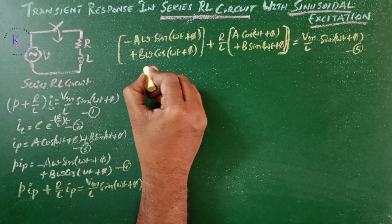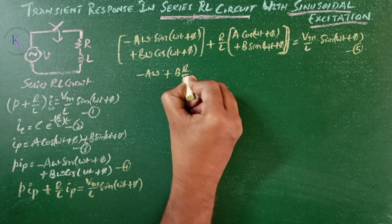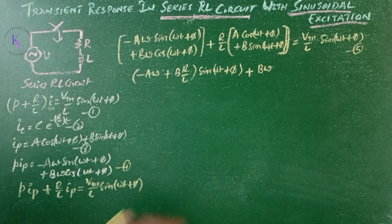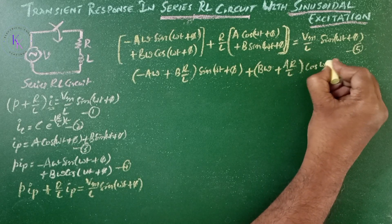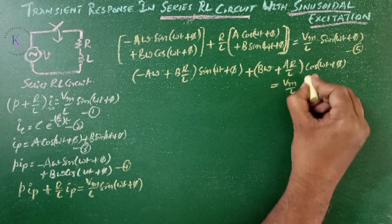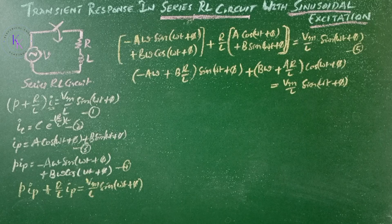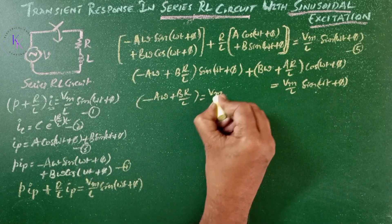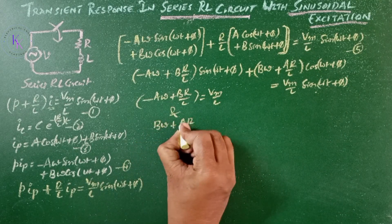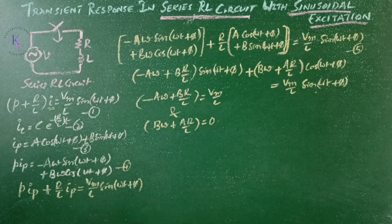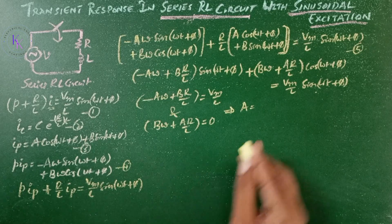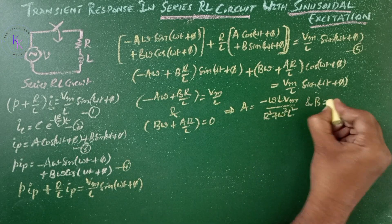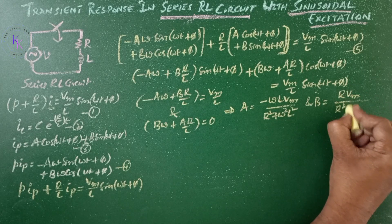Separating sin and cos terms: (−A·ω + B·R/L)·sin(ωt + φ) + (B·ω + A·R/L)·cos(ωt + φ) = (Vm/L)·sin(ωt + φ). Equating coefficients of like terms: −A·ω + B·R/L = Vm/L, and B·ω + A·R/L = 0. Solving these two equations gives: A = −ωL·Vm / (R² + ω²L²) and B = R·Vm / (R² + ω²L²).